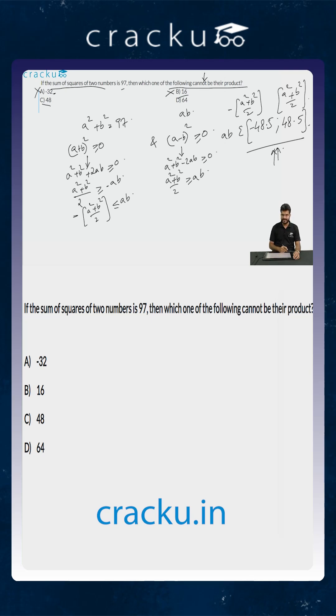If you are looking at option C it is 48. 48 also just about lies within the interval. So even this is not the correct option. If you are looking at the final option that is 64, 64 is greater than 48.5. So it won't lie within this interval. So the correct answer is 64. The product of ab will not equal 64.